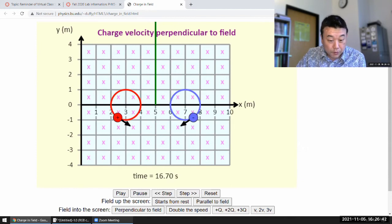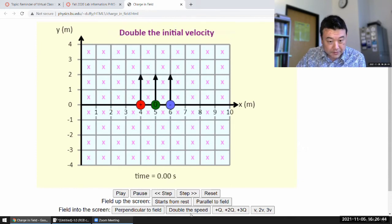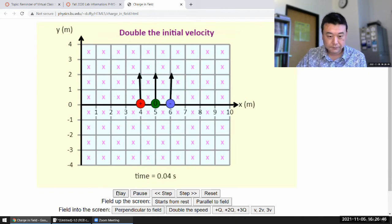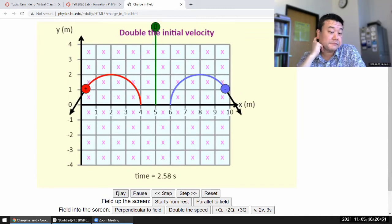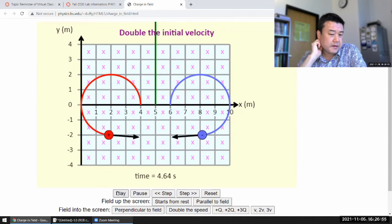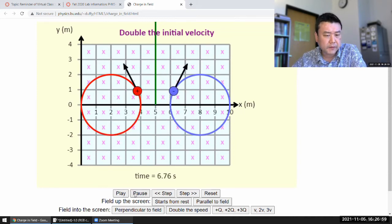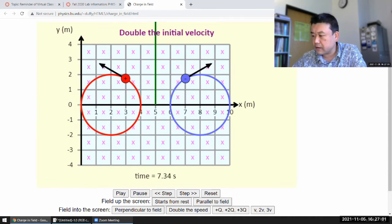Let's try doubling the speed, see what happens. Yeah, larger radius. Would you have guessed that? I think it's not immediately obvious because you got competing things here. So let me try to write this out.